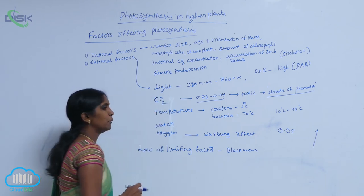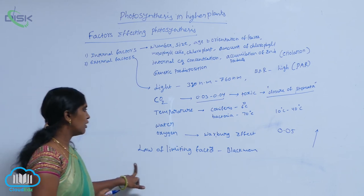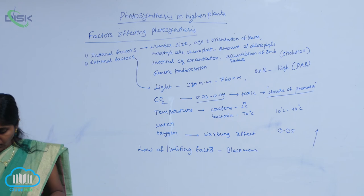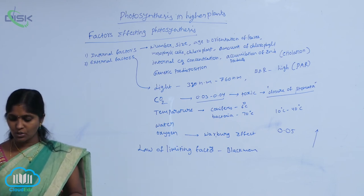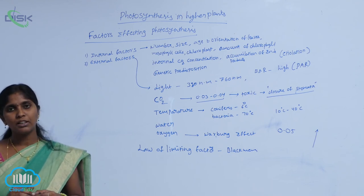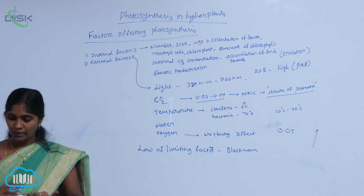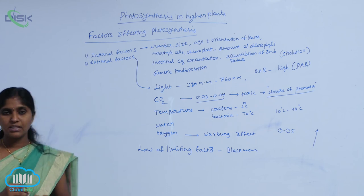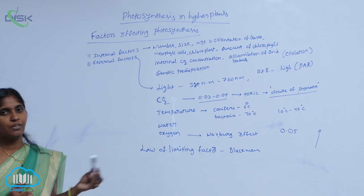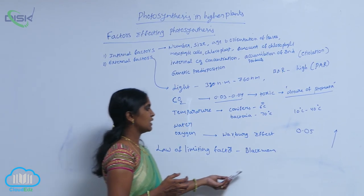Therefore, CO2 acts as a limiting factor. According to the law of limiting factor, when a reaction is mediated by multiple separated factors, the rate of the process is limited by the factor which is present in minimum value — that is called the limiting factor. This law was proposed by scientist Black.